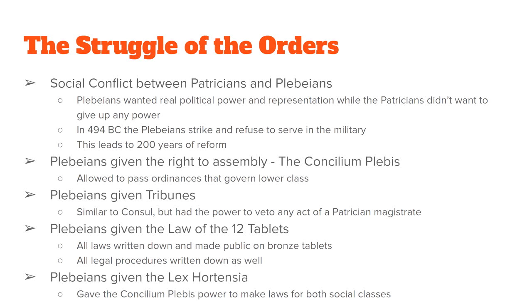After that, the Plebeians were given something called the Law of the Twelve Tables. Originally, Roman law was not written down, but this changed that. For the first time, both Patricians and Plebeians had equal access to the law. The laws were all made public for everybody, and the way the legal system worked was made available to everyone as well.